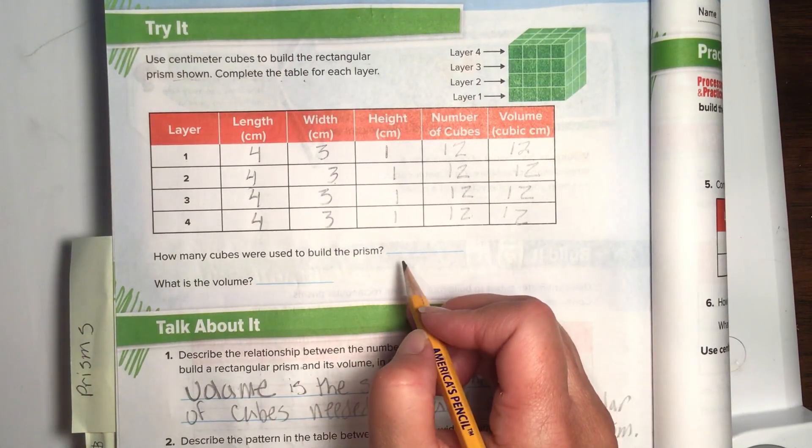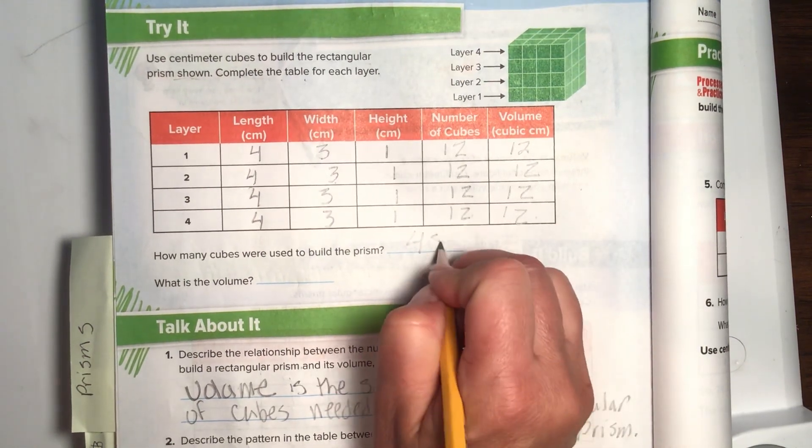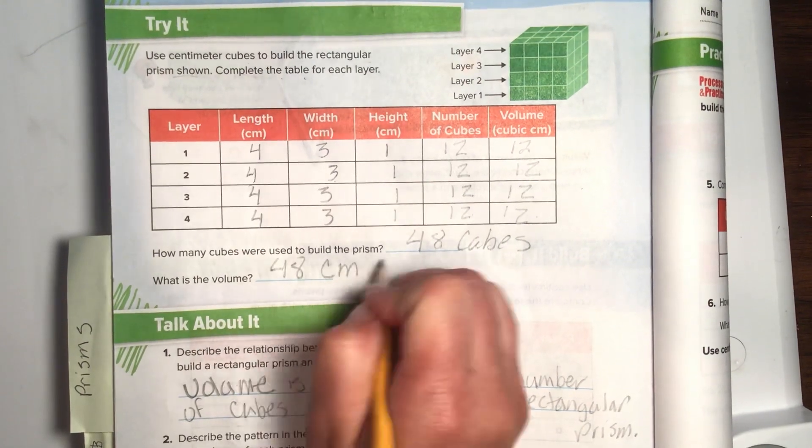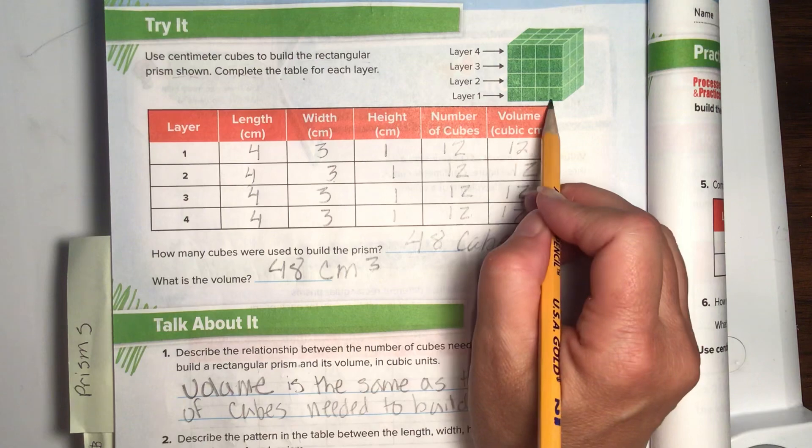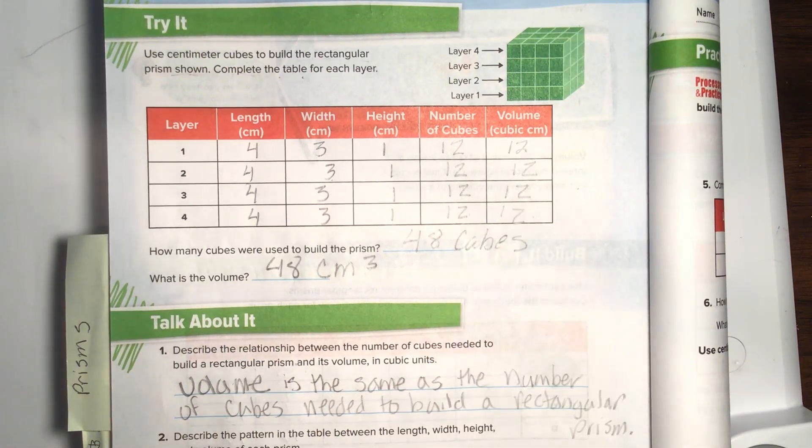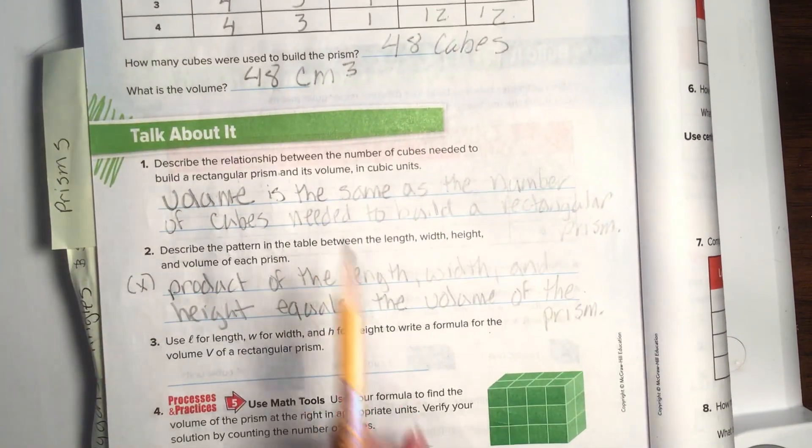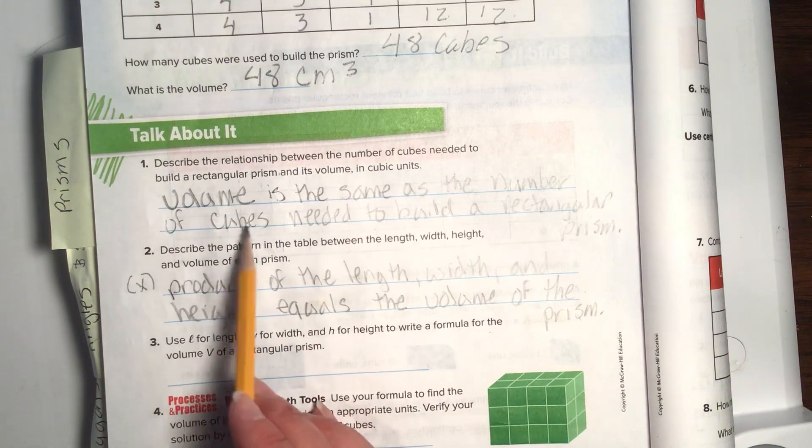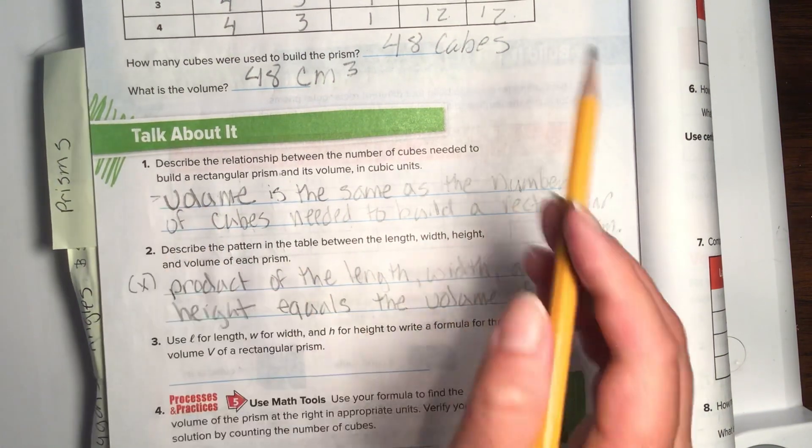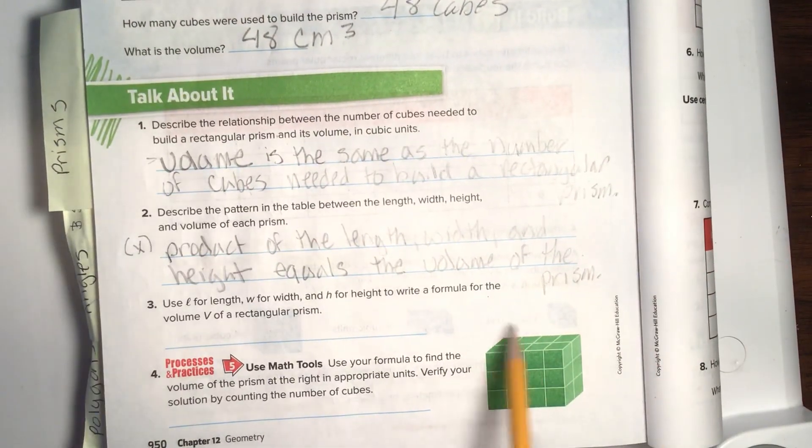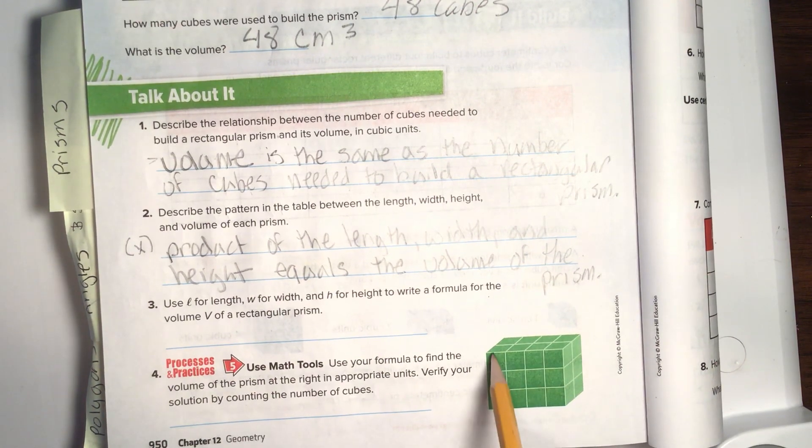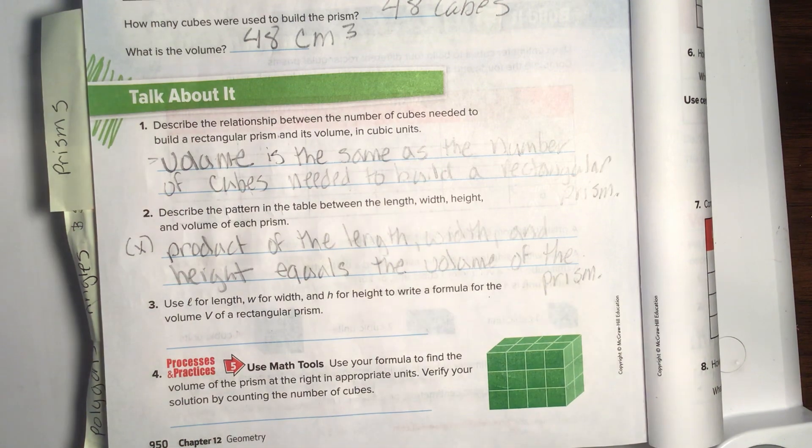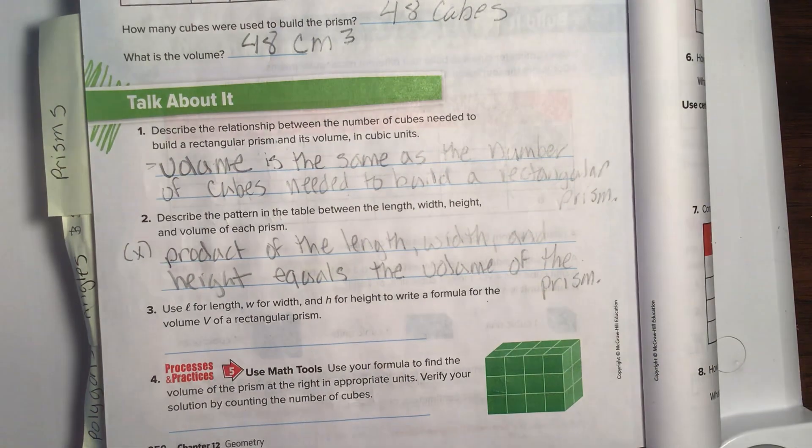How many cubes were used to build this prism? This is where you add these all together. 1, 2, 3, 4. 4 times 12 is 48. Good job. Then, you would write it as 48 centimeters cubed. That little 3 means that we times the length, times the width, times the height, to get a three-dimensional object. Describe the relationship between the number of cubes needed to build a rectangular prism and its volume in cubic units. Volume is the same as the number of cubes needed to build a rectangular prism. The volume is how many of these cubes are needed to build this. Or, if you had a bunch of ice cubes or sugar cubes that you needed to put together, that would be the volume. Feel free to push pause if you need to copy that down.